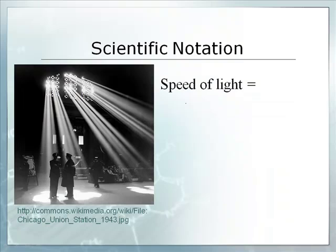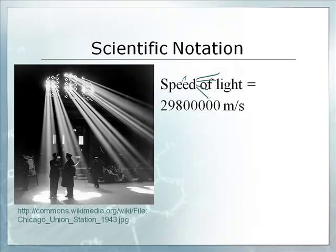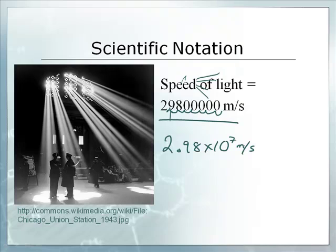Here's another big number — this is the speed of light. Light travels very, very fast. The decimal goes between the 2 and 9, so that's 2.98. Then we count how many spots the decimal moved: 1, 2, 3, 4, 5, 6, 7, 8 — it's times 10 to the 8th meters per second. The number on the board was missing a zero, but the answer is 10 to the 8th meters per second.